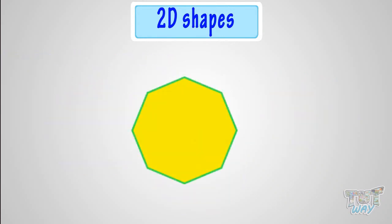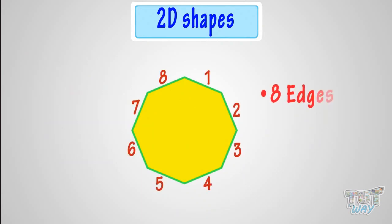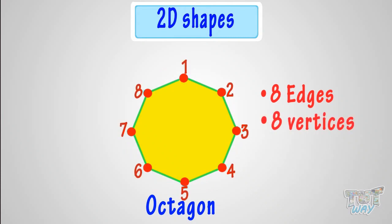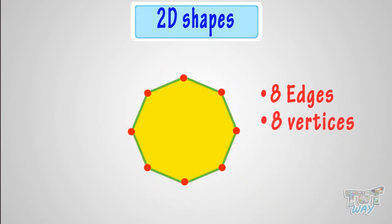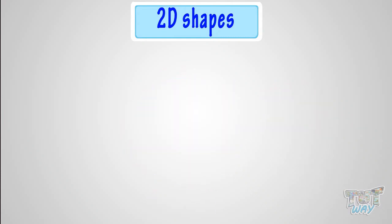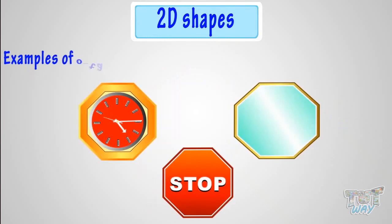This is a polygon that has eight straight sides, and is called an octagon. It has eight vertices and eight edges. These are some of the octagon-shaped things.